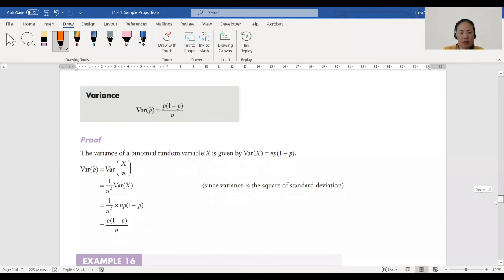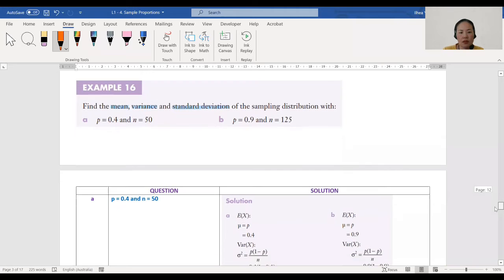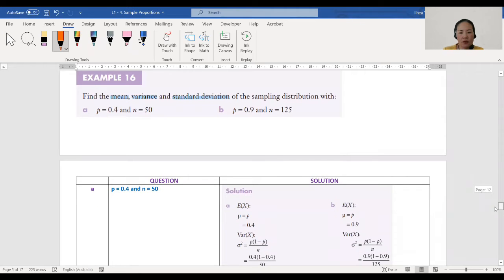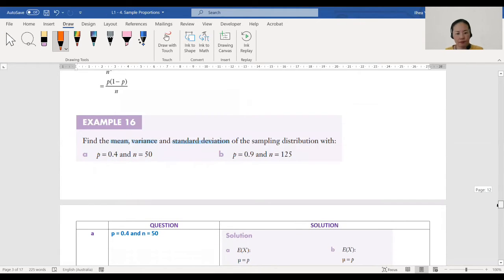Example 16. Joanne, can you read it for us? Find the mean, variance, and standard deviation of the sampling distribution with: a) p equals 0.4 and n equals 50; b) p equals 0.9 and n equals 125.